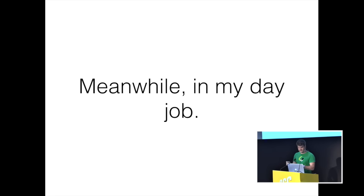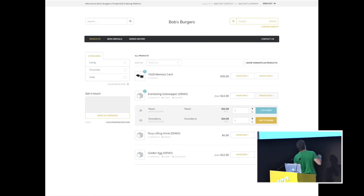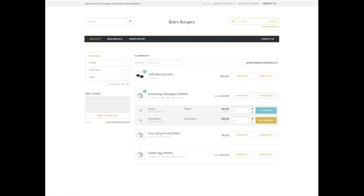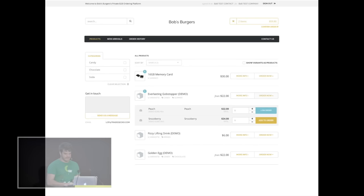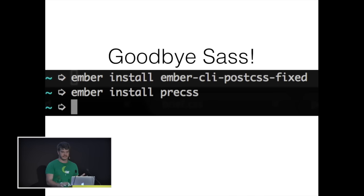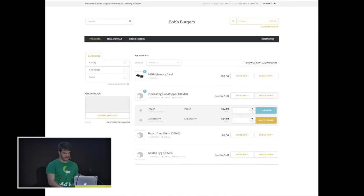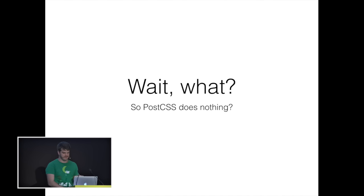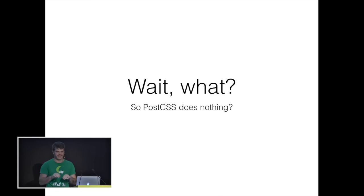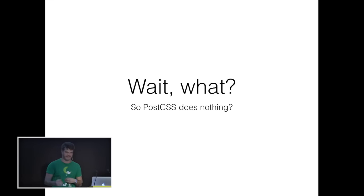In my day job I have this e-commerce platform — it has about ten pages, very small, easy to use, with demo data about Willy Wonka. I wanted to replace Sass with PostCSS. I installed PostCSS — apparently the normal library is broken, so there's a fixed one — then I installed preCss, the Sass drop-in replacement. Nothing changed. At this point I had a draft email to Thomas saying this isn't working. Nothing's breaking. It just works. How do I make this story about PostCSS failing me work?